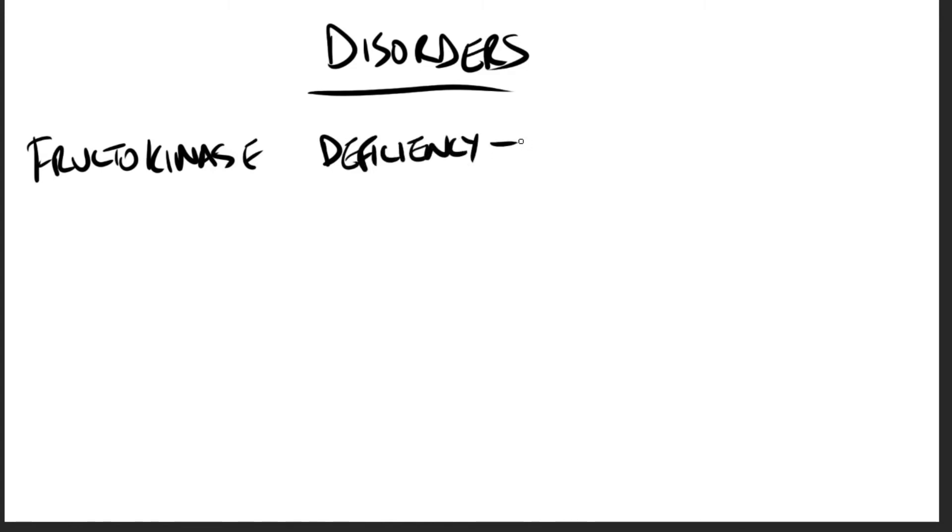A deficiency of one of the key enzymes required for the entry of fructose into intermediary metabolic pathways can result in either a benign condition from fructokinase deficiency, known as essential fructosuria, or a severe disturbance of liver and kidney metabolism from aldolase B deficiency, known as hereditary fructose intolerance or HFI.